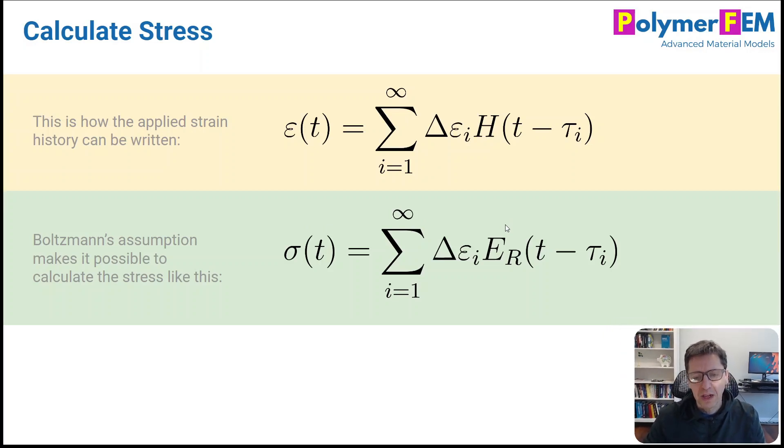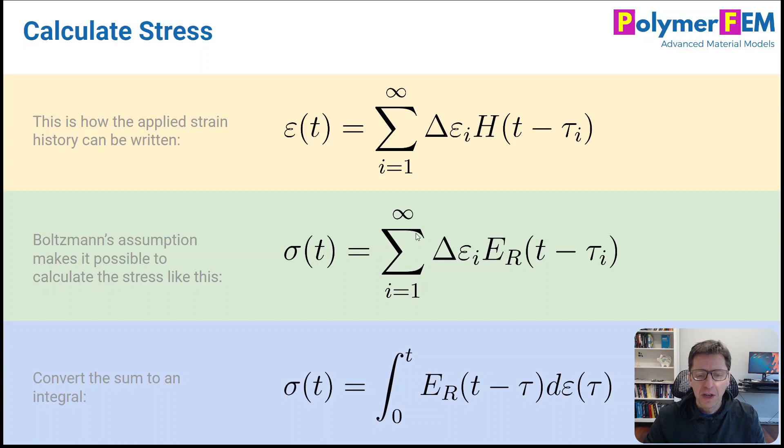To make this more useful in real life, we convert the summation into an integral. So we convert the sum to an integral, and you may remember from your math classes back in the day, that this is something you can do when this goes to infinity. So this is an integral that's exactly like this. Instead of delta epsilon, the d epsilon, this is the relaxation modulus. We can also convert the infinity here to the t variable by saying that there is no relaxation at negative times. So this is a really useful equation that tells you stress as a function of an integral of this kind.